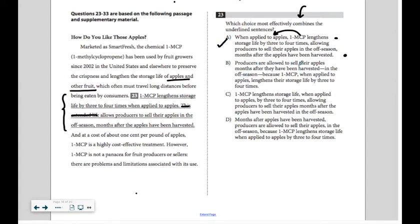Producers are allowed to sell their apples months after they've been harvested in the off-season because 1MCP, when applied to apples, lengthens their storage life by three to four times. They've moved everything around here, and I'm not sure it necessarily needs to be moved around.